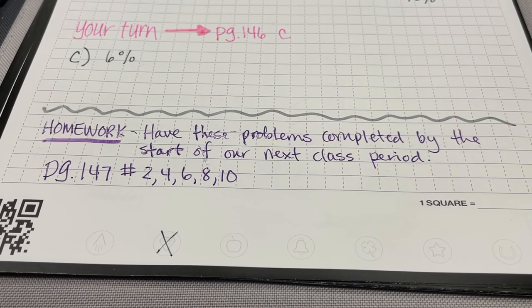So your homework tonight is page 147, numbers 2, 4, 6, 8, and 10. Please have these problems completed by the start of our next class period so that we can organize ourselves into our small groups.